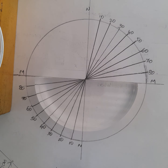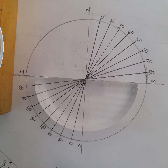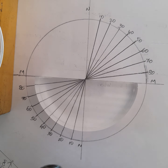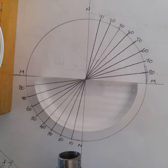Now we send the light rays through the curved surface of the semi-circular glass disc. This means we are making the light rays travel from denser medium to rarer medium.